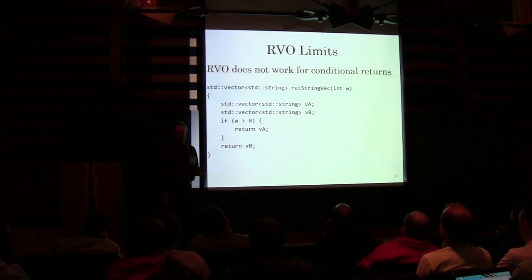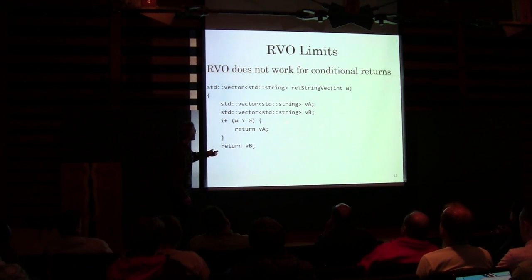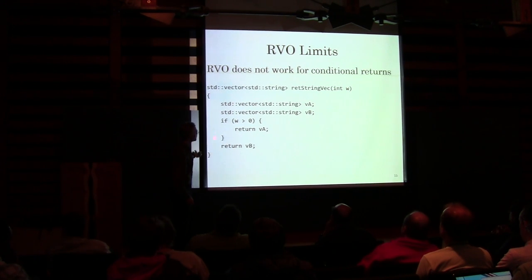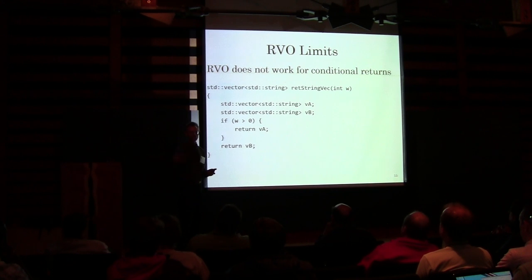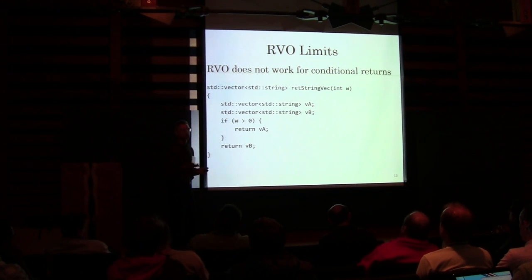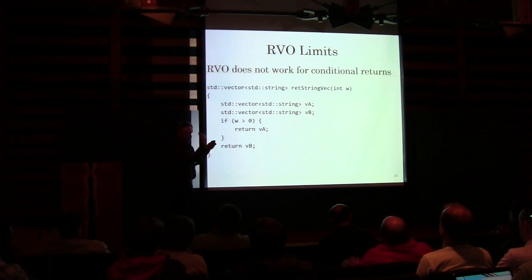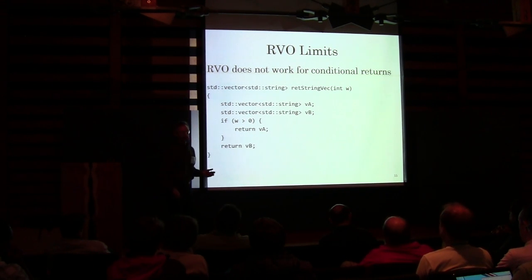But it doesn't work all the time. Specifically, let's say that I have two vectors and I'm passing a condition so that at the point when this code is executing, we don't know which of those two — VA or VB — is going to be returned. The semantics of construction don't allow me to guess which one is more likely and construct it up there. So we have to build them locally and then copy them up.